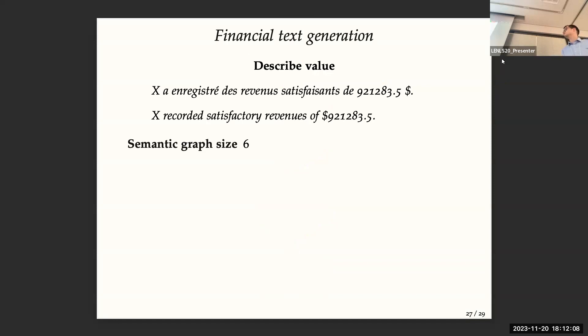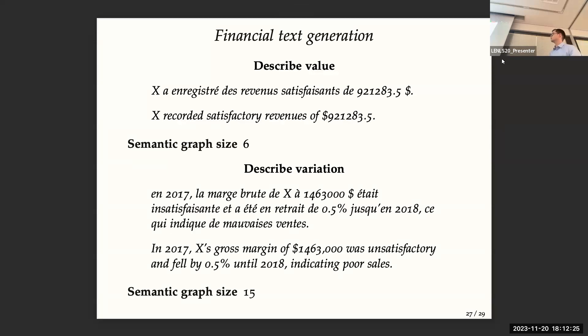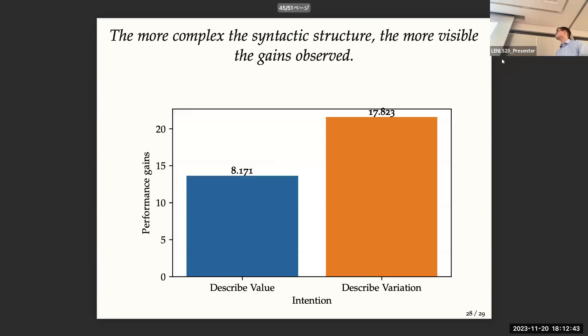So for basic sentences, let's describe the value for KPIs. We have a semantic graph size of 6. So we have two experiments. One with this kind of simple sentences, and we can increase a bit of the complexity by describing the variation. So here we have a semantic graph size of 15, and we are describing the margin, of course, margin in English. And so we observe that with this extension, we divide by 8 on the simple describe value, the time to generate the report. And for the described variation, we divide by 17, which is a lot more. So it seems that the more complex the syntactic structure, the more visible the gain becomes.